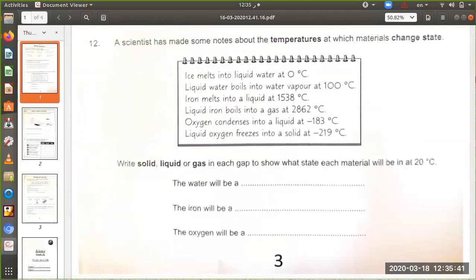The last question: write solid, liquid, or gas. The water will be a liquid at 20 degrees Celsius. The iron will be solid at 20 degrees Celsius because it starts to melt at 1538. The oxygen will be a gas at 20 degrees Celsius because it will start to condense at negative 183. This is our weekly sheet, so thank you.